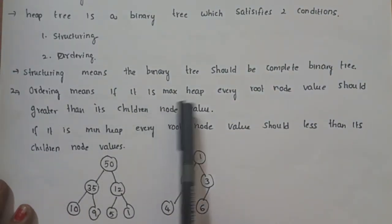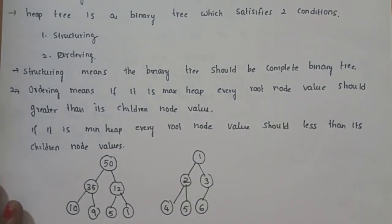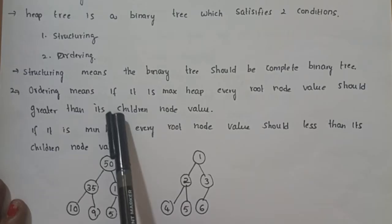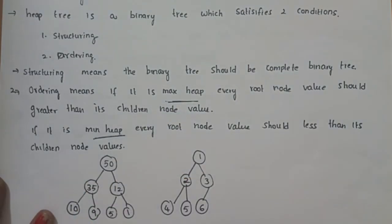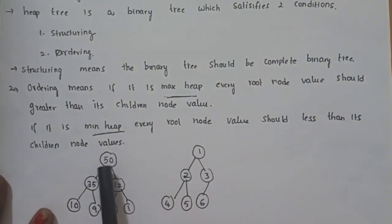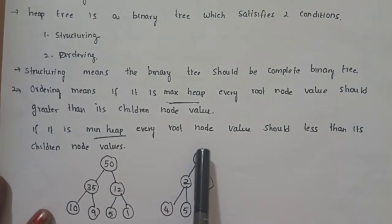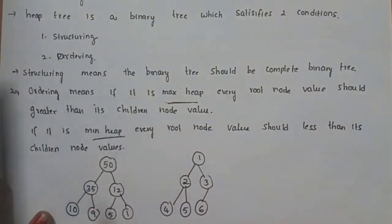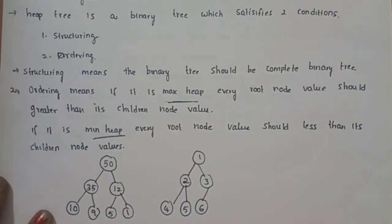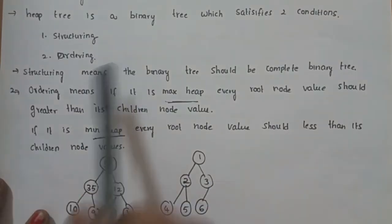Ordering means if it is max heap or min heap — there are two types in the heap tree: max heap and min heap. Max heap means the root node value is greater than the children node values. Min heap means the root node value is smaller than the children node values. So the ordering property is satisfied. Max heap satisfies max heap ordering and structuring; min heap satisfies min heap ordering and structuring. Both properties are satisfied in the heap tree.